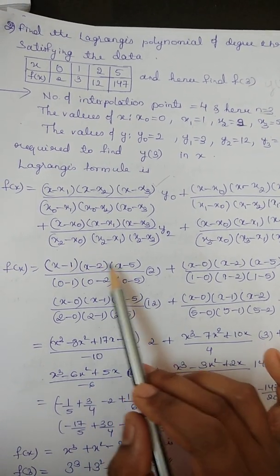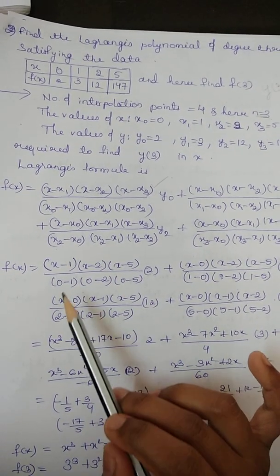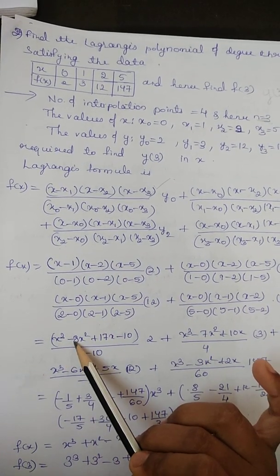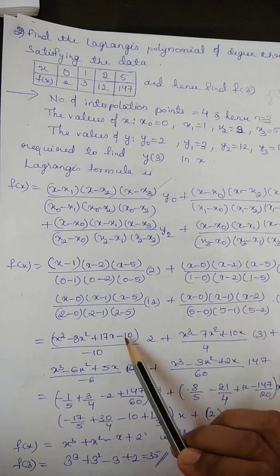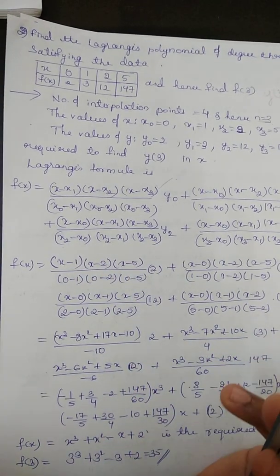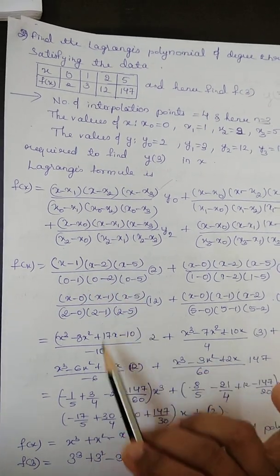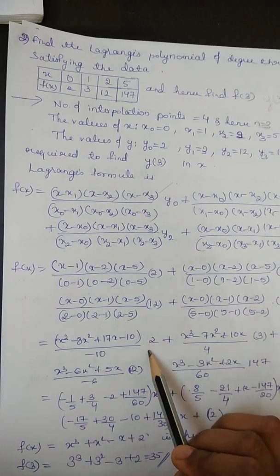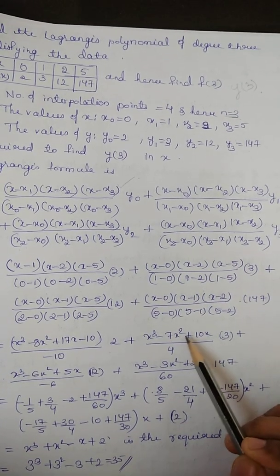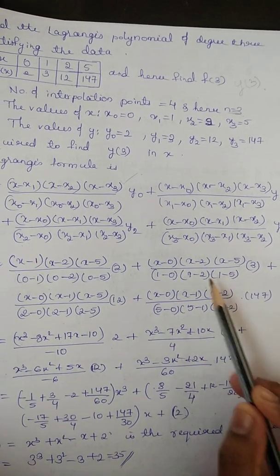Open the bracket. x minus 1, x minus 2, x minus 5. So, it will be, when you open this bracket, we will get the term x3 minus 8x square plus 17x minus 10. Go on multiplying x minus 1 into x minus 2 into x minus 5. Whole divided by, this will be minus 10, and this 2 as it is.